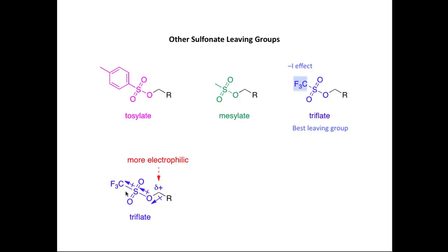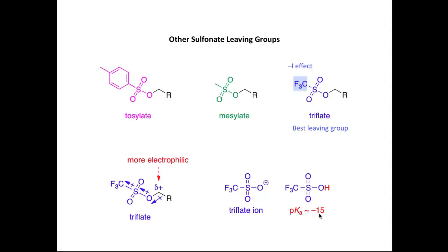The CF3 group exerts a very strong minus-I effect, which explains why triflate is a really outstanding leaving group — better than mesylate and tosylate. The CF3 group makes the carbon atom even more electrophilic and highly susceptible to nucleophilic attack. Regarding anion stability: the pKa of trifluoromethanesulfonic acid, the conjugate acid of triflate, is minus 15 — an incredibly strong acid. The resulting triflate anion is even more stable than the mesylate ion, because the CF3 group stabilizes the negative charge through inductive effects, helping to delocalize it across the molecule.